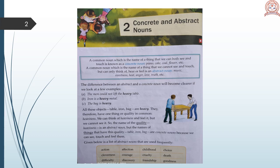So students, a common noun which is the name of a thing that we can both see and touch is known as a concrete noun. A common noun which is the name of a thing that we cannot see and touch but can only think of, hear or feel is an abstract noun. For example, music, sweetness, heat, anger, love, truth, etc.